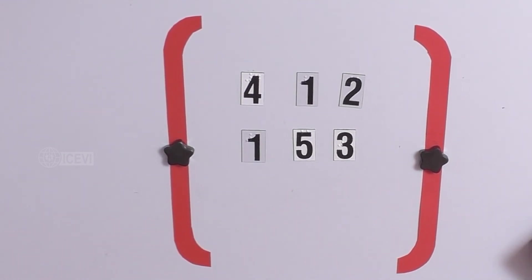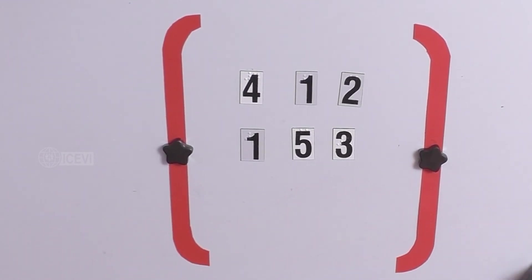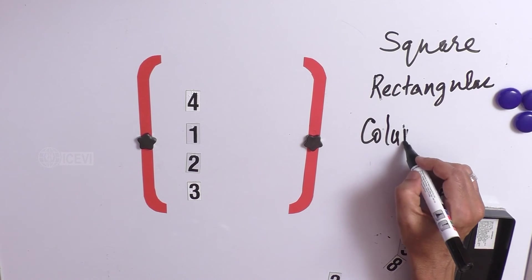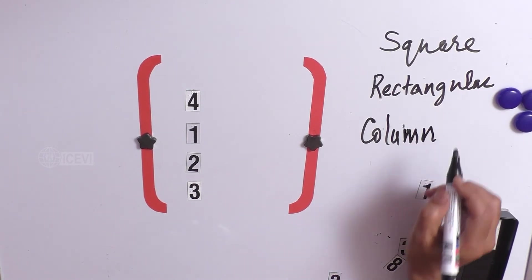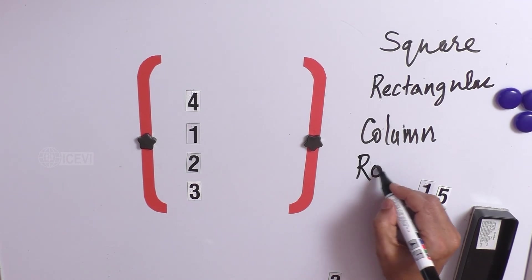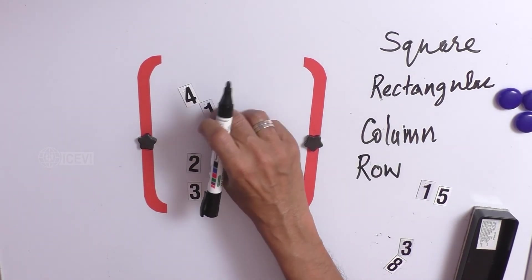Now, we also get occasions where we have only one column, we call that as a column matrix. And when we have only one row, we call that as a row matrix.